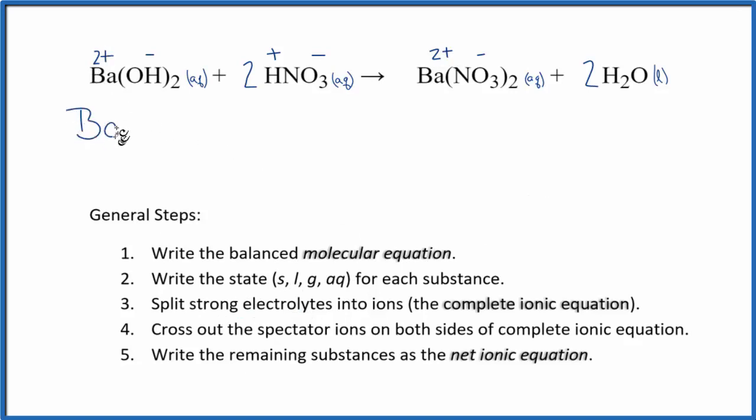I have Ba2 plus, and I won't write aqueous after everything. Let's do that at the end. Plus I have the hydroxide ion, OH minus. The subscript means I have 2 of these. I have H plus, and the coefficient means I have 2H plus, and the 2 applies to everything. So I also have 2 nitrate ions, NO3 minus.